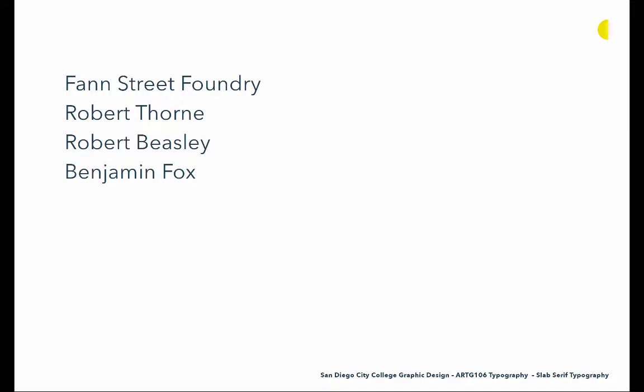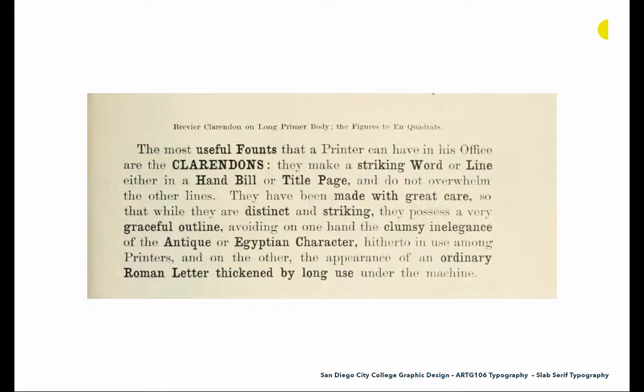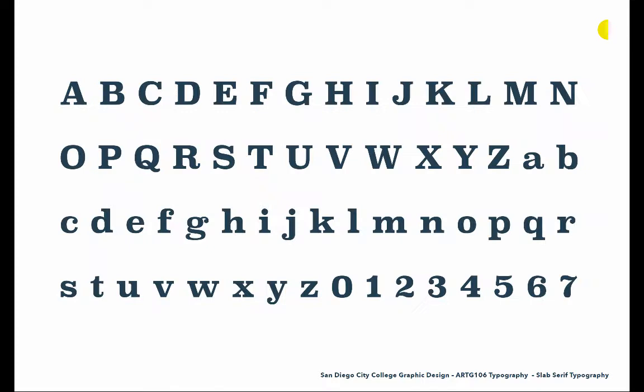The next development we really have is through the Fann Street Foundry, through Robert Thorne, Robert Besley, and Benjamin Fox who developed the first Clarendon style typeface. Benjamin Fox was the punch cutter — he was actually working on creating those punches. Their first Clarendon was a very popular release. It worked really well in text, has high bracketing which gives it more warmth, and tones down some of the geometry and angularity of other slab serifs. Once it was created, we saw many, many variations of it.